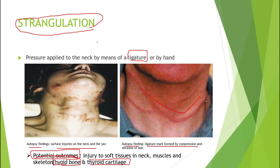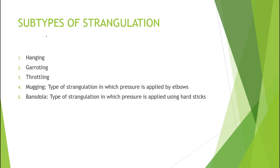Mechanical asphyxia is divided into strangulation and non-strangulation related types. We have studied the non-strangulation types including traumatic asphyxia, smothering, burking, gagging, and choking. Now we move to the subtypes of strangulation-related mechanical asphyxia. There are five subtypes: hanging, garroting, throttling, mugging, and benzola.